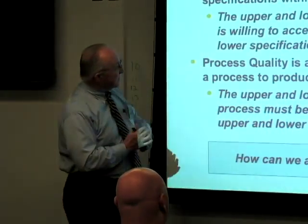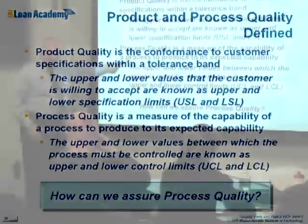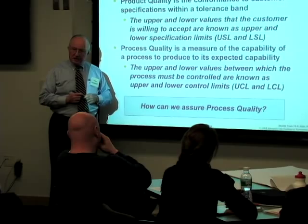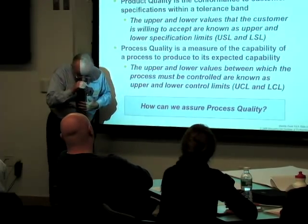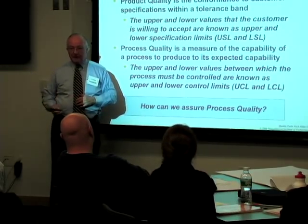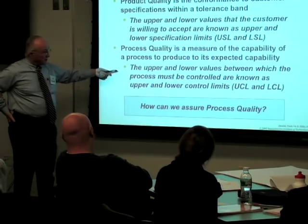Engineers have got to be sensitive to this. We're talking about upper and lower specification limits — plus or minus 15 thousandths is what we're trying to control to. Process quality is a measure of capability. When we want very precise holes, we use a jig boring machine, often made in Switzerland. You just can't take the Sears Roebuck drill press and get that kind of dimensional quality.